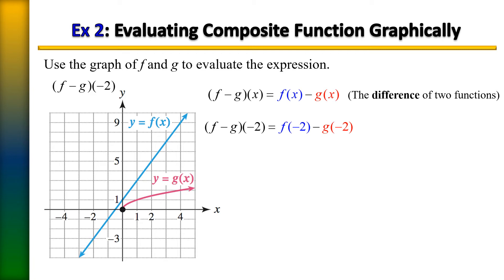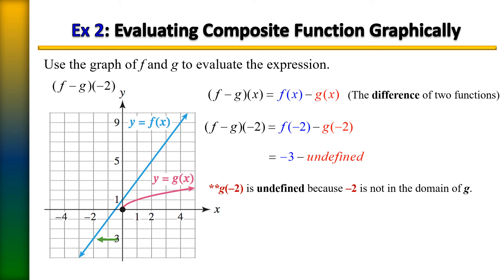Now we want to evaluate g of negative two. If we go over to negative two, we will never be on the graph because the graph of g of x does not extend on the negative side. That's the square root function, which does not include any negative numbers — so it is not in the domain of that function. We would say that g of negative two is undefined, and if any part is undefined, then f minus g of negative two is also undefined.